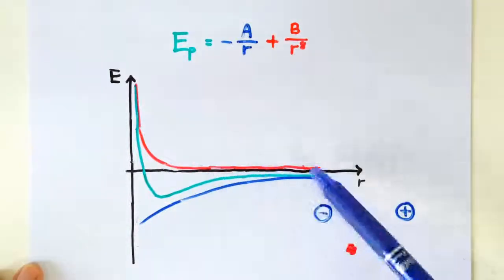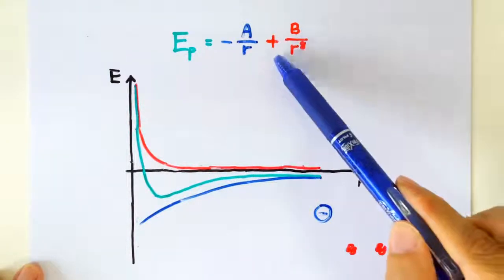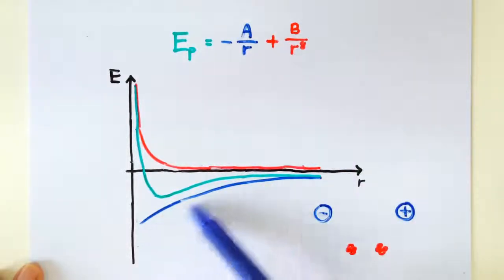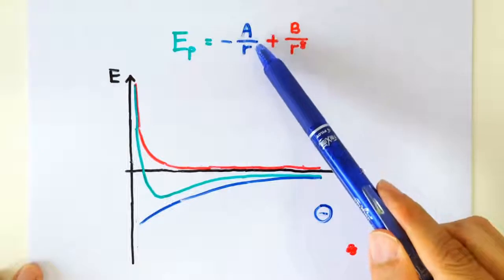So the red line corresponds to the term positive B over r to the power of 8. And this blue line corresponds to the term negative A over r.